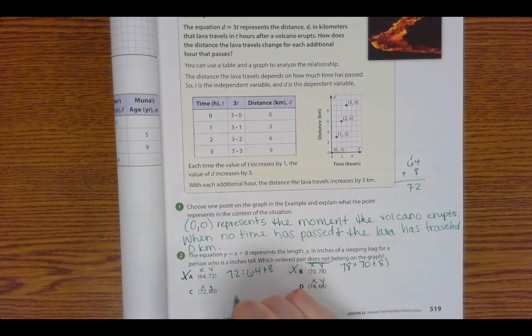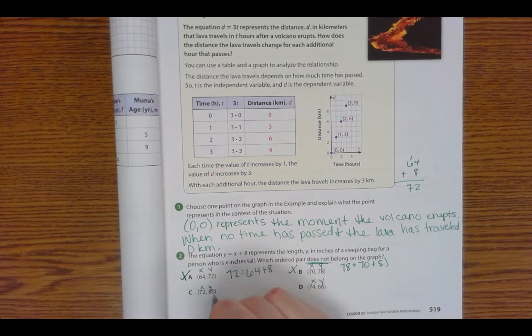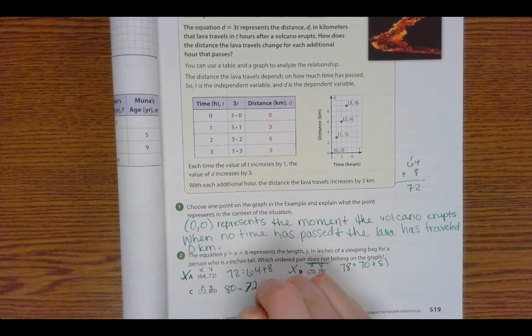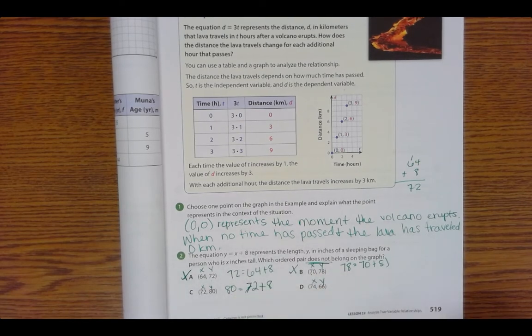All right, 72 and 80. So y equals x plus 8. So y is 80 and x is 72 plus 8. Does that give me 80? Yep. So that can't be our answer.